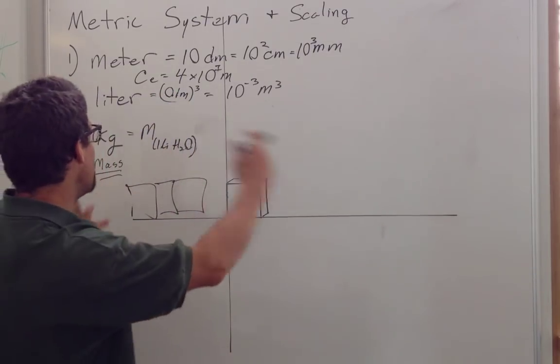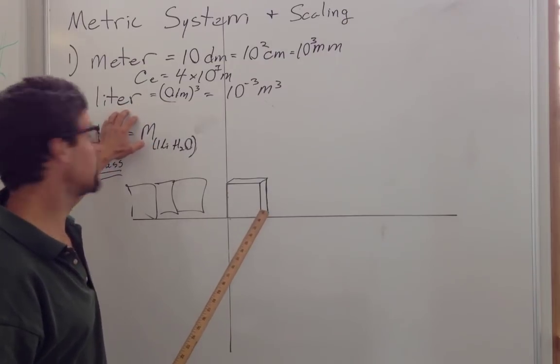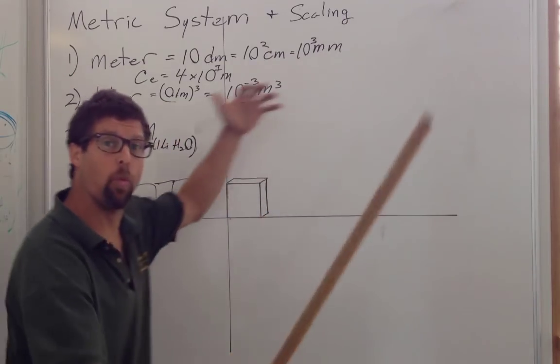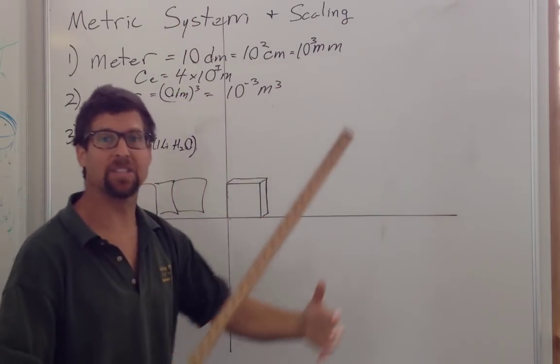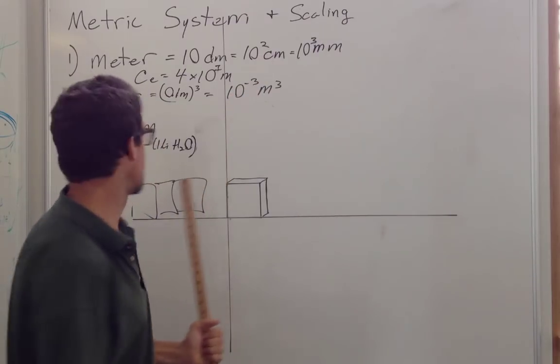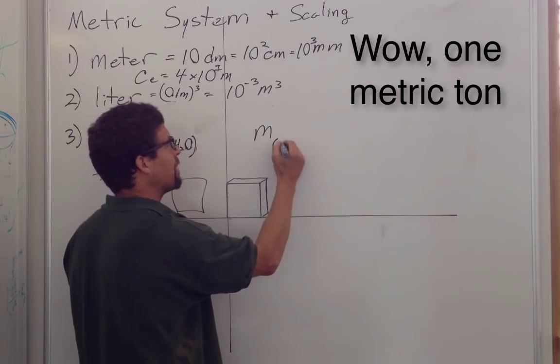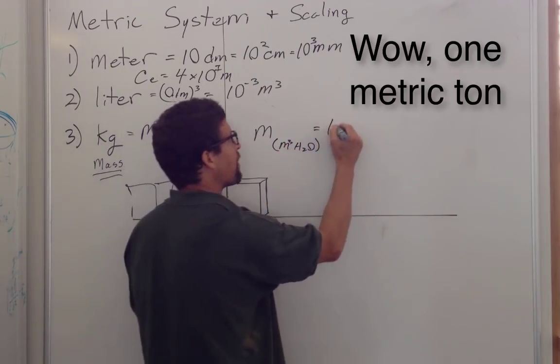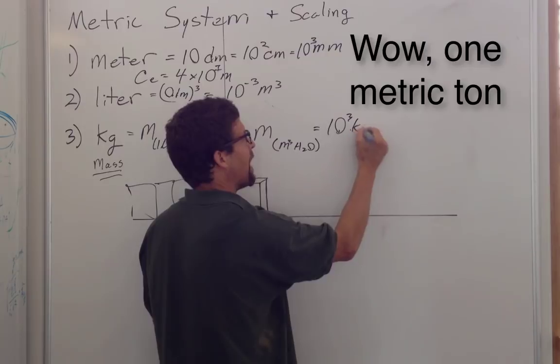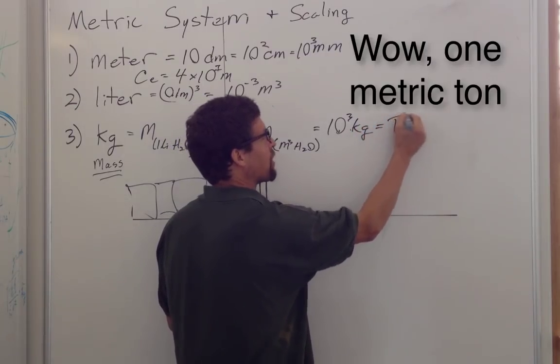So a cubic meter is 1,000 liters, and therefore a cubic meter of water would have the mass of 1,000 liters, or 1,000 kilograms. So the mass of a cubic meter of water would be 1,000 kilograms, or one metric ton.